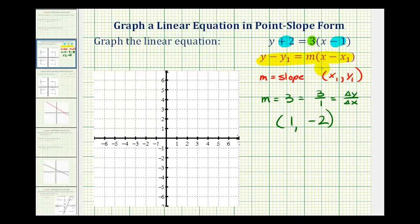But an easy way to remember is that the x and y-coordinates are always going to be the opposite of what you see, meaning here we see x minus one, so the x-coordinate is positive one. And here we see y plus two, so the y-coordinate is negative two.